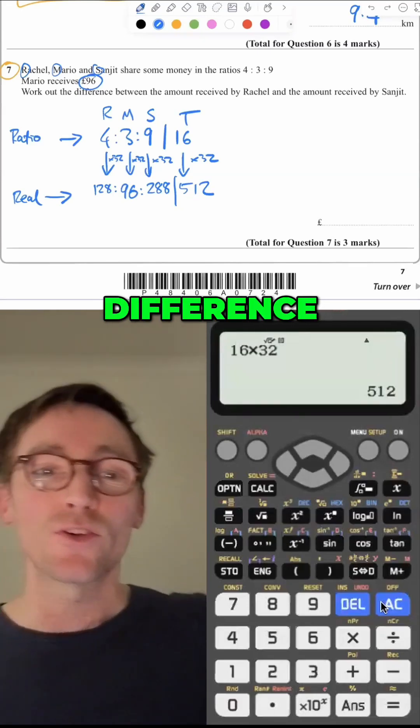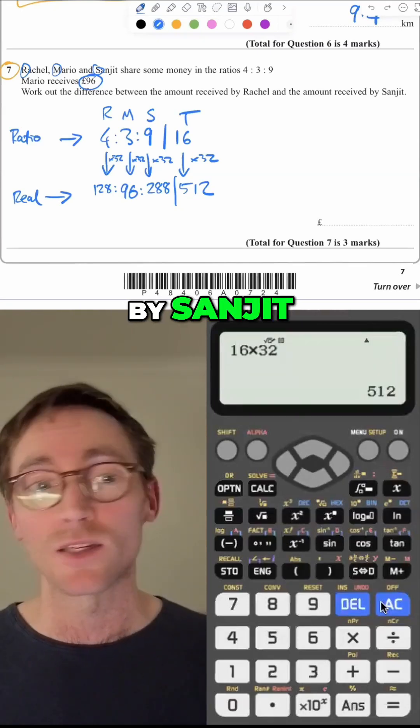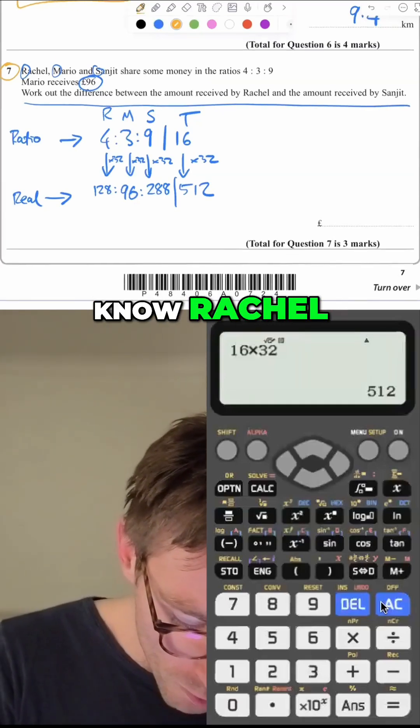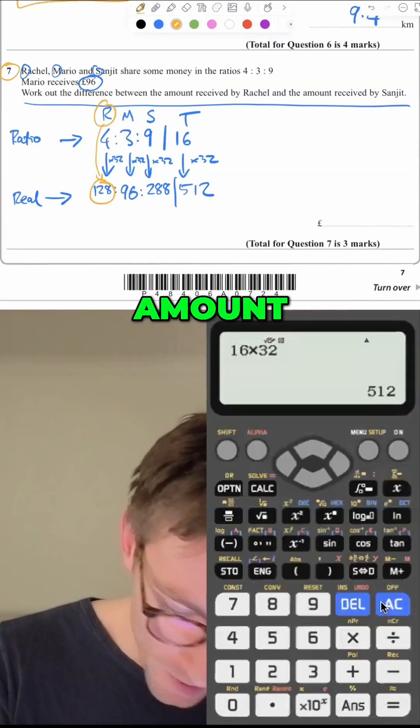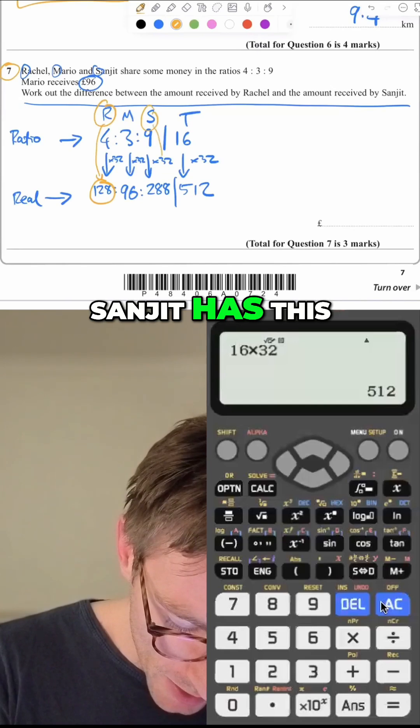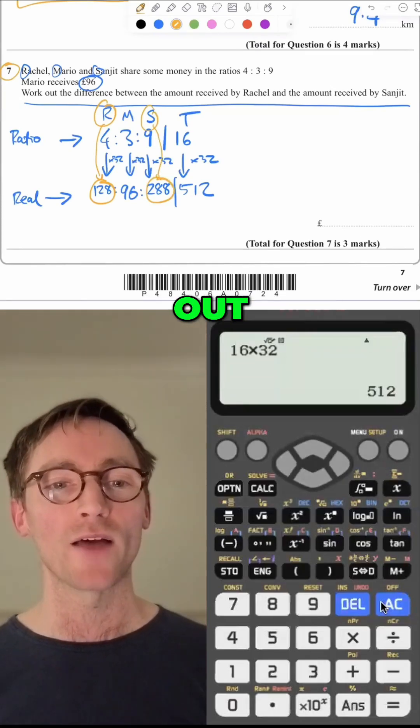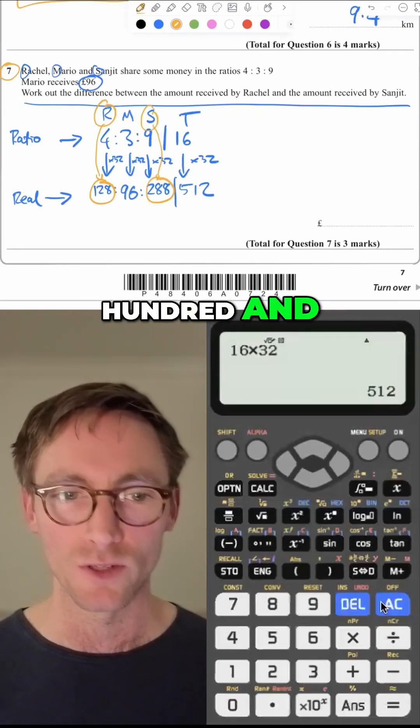Now let's split the money. Mario received that. Work out the difference between the amount Rachel received and the amount received by Sanjit. Okay. Now this is so much easier because we actually know Rachel has this amount, Sanjit has this amount. And now the question is really simple. It's just work out the difference between 128 and 288.